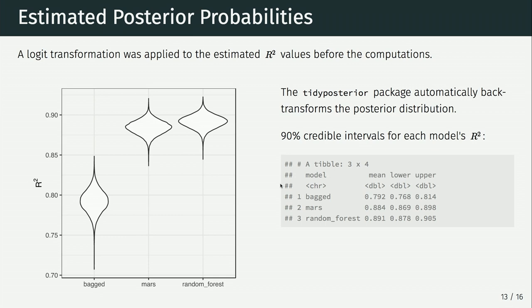What you can do is get credible intervals by looking at percentiles of these distributions. For the random forest model, you can say the true performance is about 89.1%, and with a 90% interval it could be as high as 90.5% or as low as 87.8%. What's cool about this is it lets you make comments directly about the thing you want, instead of the convoluted interpretations of a confidence interval or a p-value.